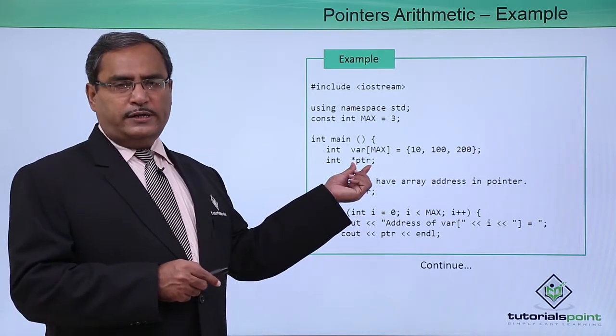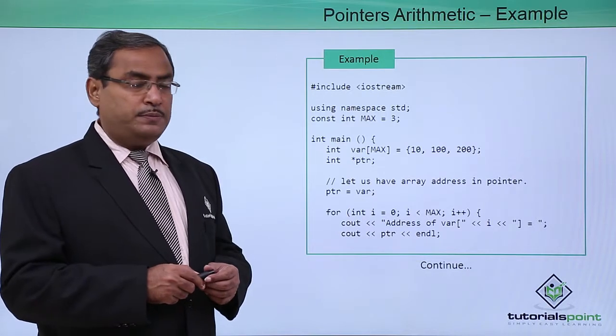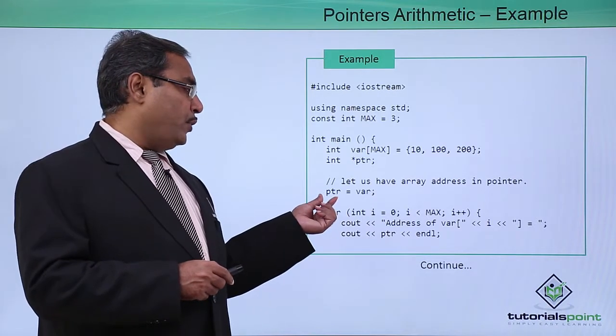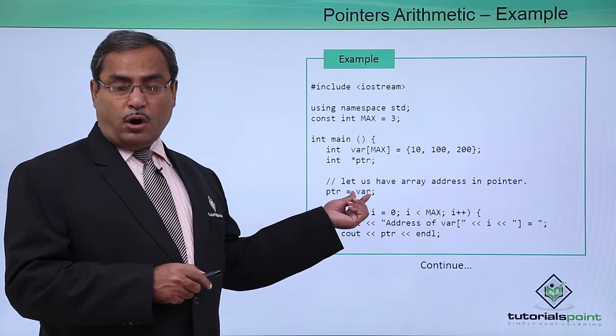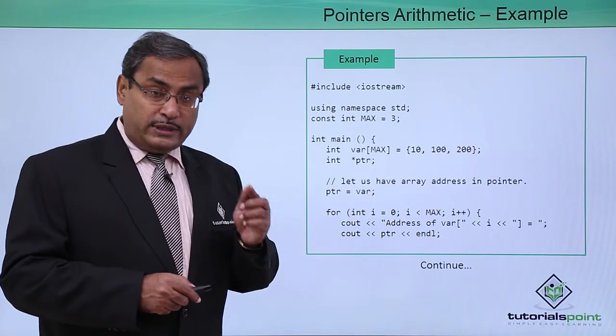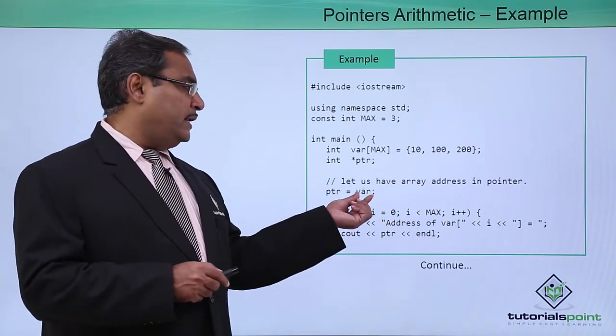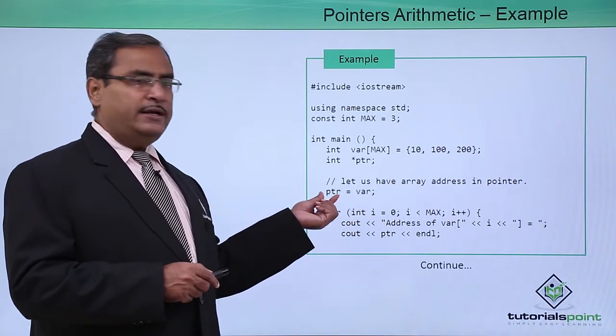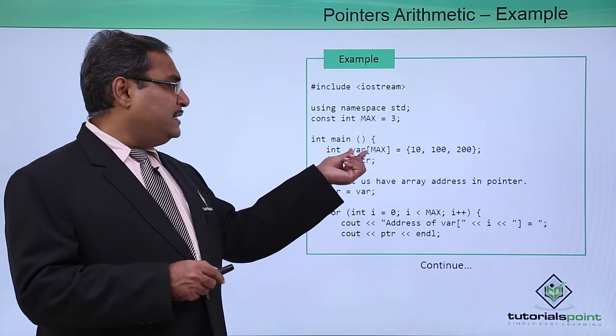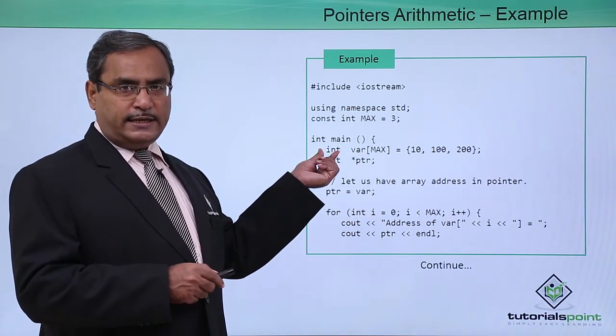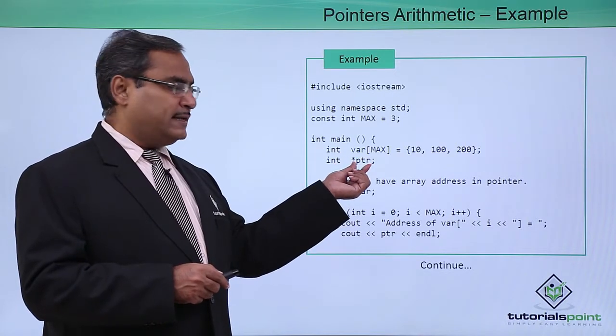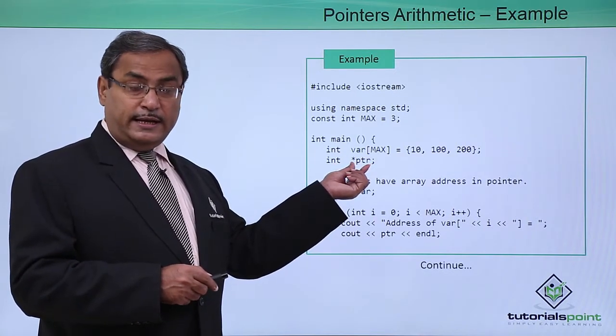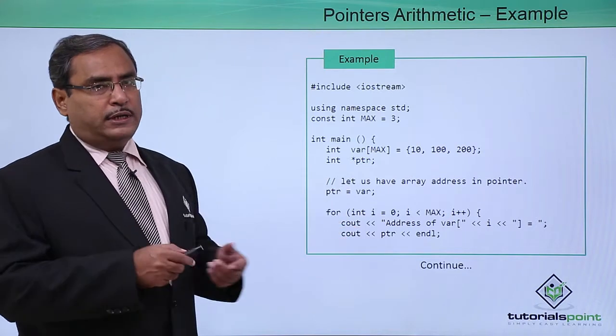Now we have one pointer type of variable, pointer PTR, and this pointer is now pointing or has been initialized with the starting address of this array. As this array contains integer data, the address assigned to PTR will also be of type integer.